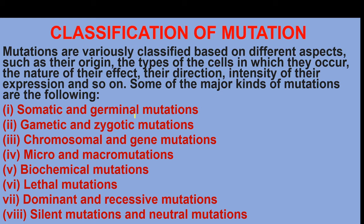The main categories we will cover are: somatic and germinal mutations, chromosomal and gene mutations, micro and macro mutations, biochemical mutations, lethal mutations, dominant and recessive mutations, and silent and neutral mutations.